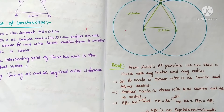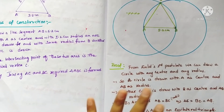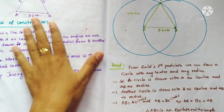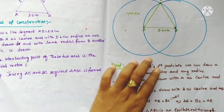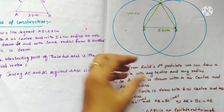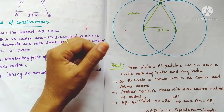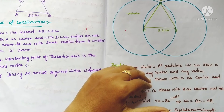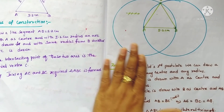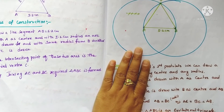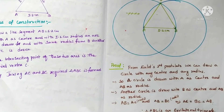To construct an equilateral triangle, you can use either method, but especially in this chapter, constructing by using Euclid's postulate is preferred. It is better to follow this process.